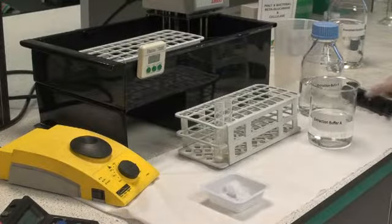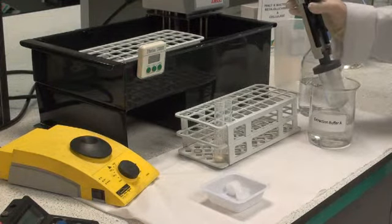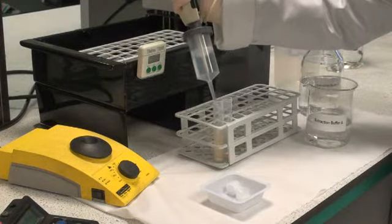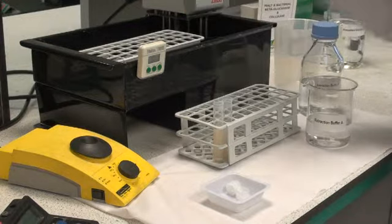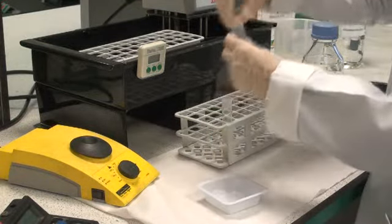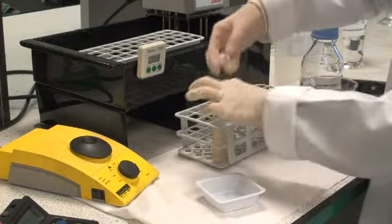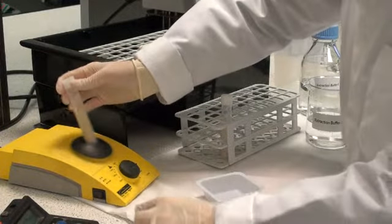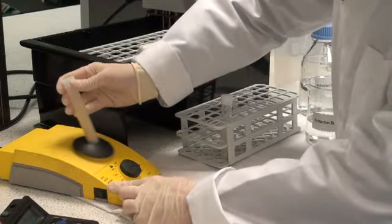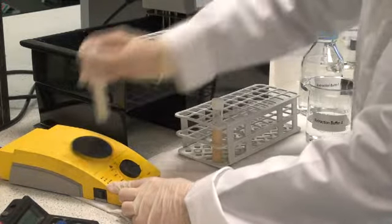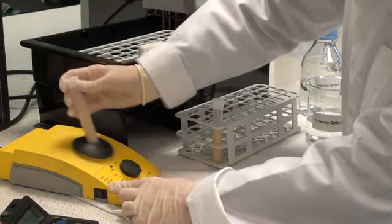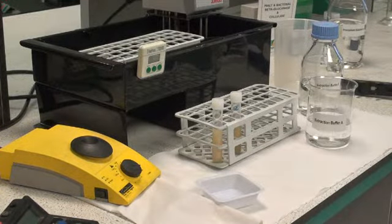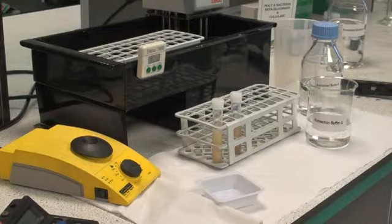Add 8 ml of extraction buffer solution A to each tube containing the milled malt samples. Cap these tubes and stir the contents vigorously on a vortex mixer. Leave these samples to extract for approximately 15 minutes at room temperature with occasional mixing on the vortex mixer.